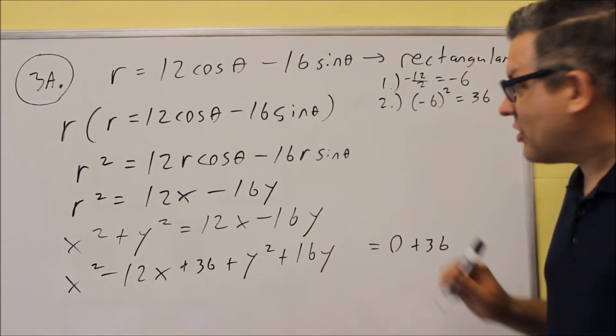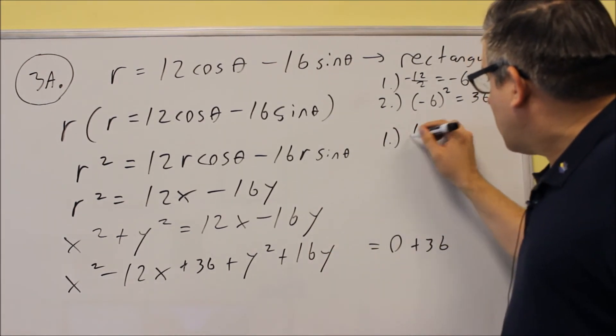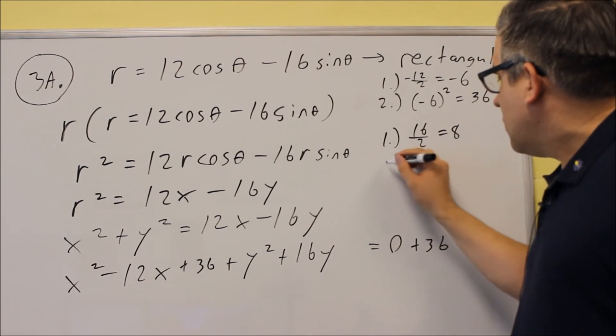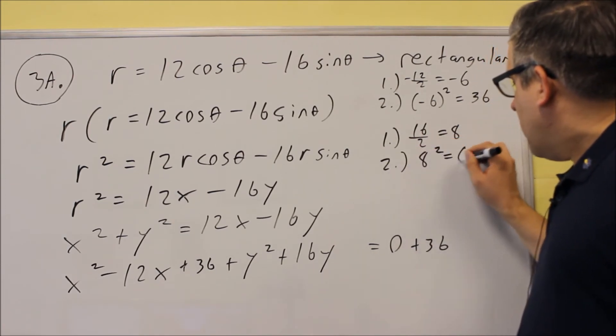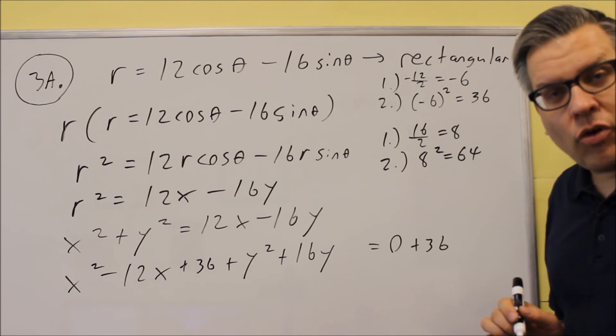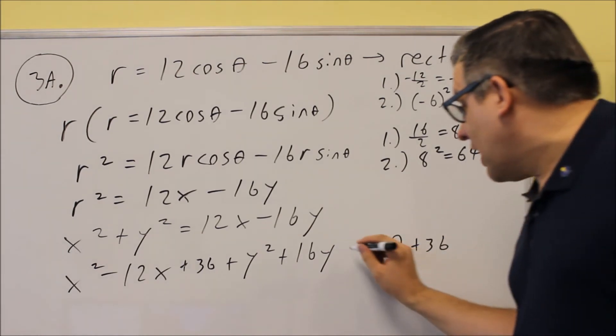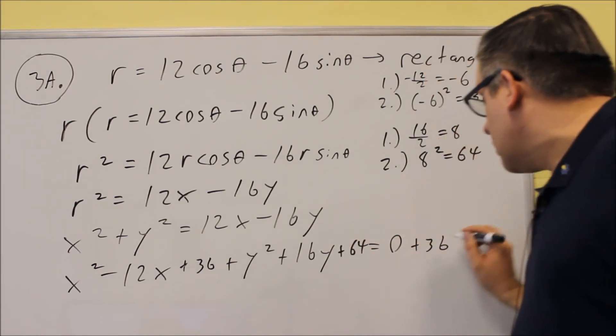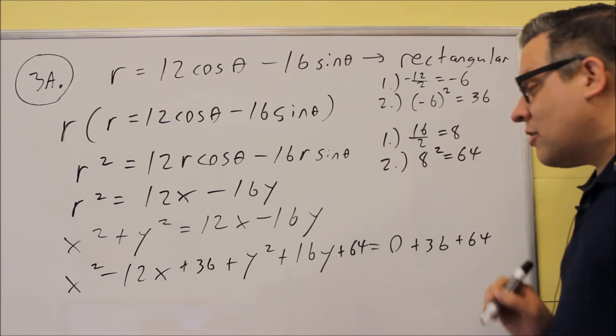Let's do the same thing for the 16. 16 divided by 2 is 8, and 8 squared is 64. The answer you get in step 2, you're going to add that to both sides of the equation. So we add that on both sides.